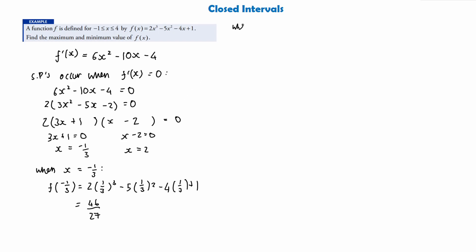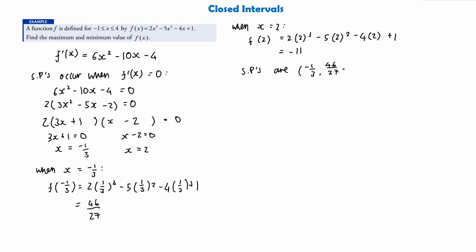We also want the y-coordinate when x = 2: f(2) = 2(2³) − 5(2²) − 4(2) + 1. Again on a calculator paper just plug it in — you should get −11. So the stationary points are (−1/3, 46/27) and (2, −11). We can see that 46/27 is currently the maximum value we know and −11 is currently the minimum value we know. But we have not yet worked out the end points, so we need to do that next.